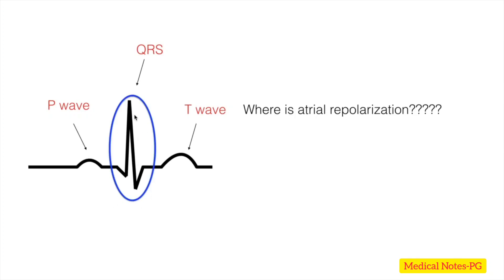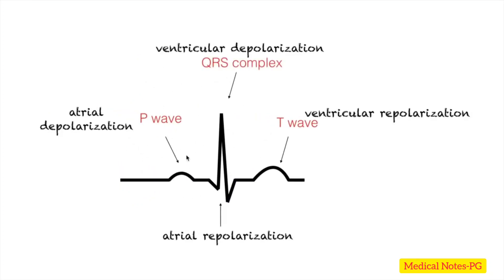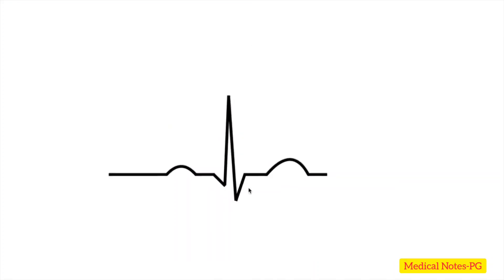The QRS complex is a tall structure because the ventricles contract stronger than the atria, and they mask atrial repolarization. So atrial repolarization and relaxation takes place after the P wave but is hidden within the QRS complex. To review: P wave = atrial depolarization; QRS complex = ventricular depolarization; T wave = ventricular repolarization; and atrial repolarization is covered by the QRS complex.